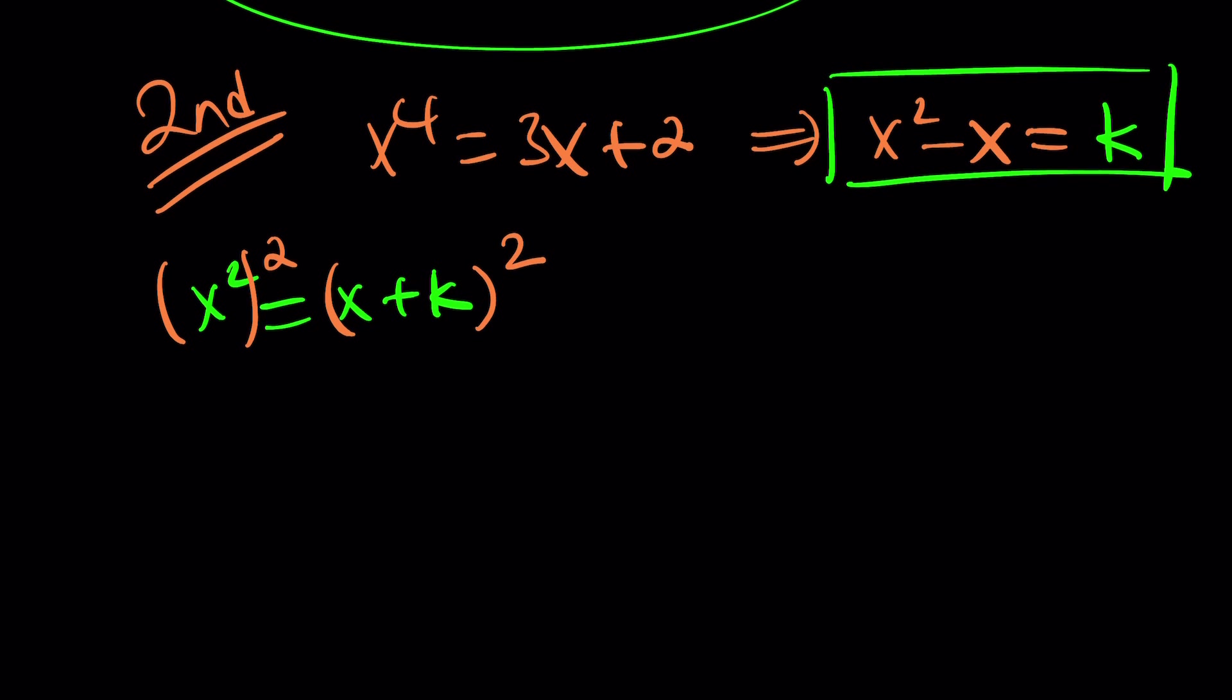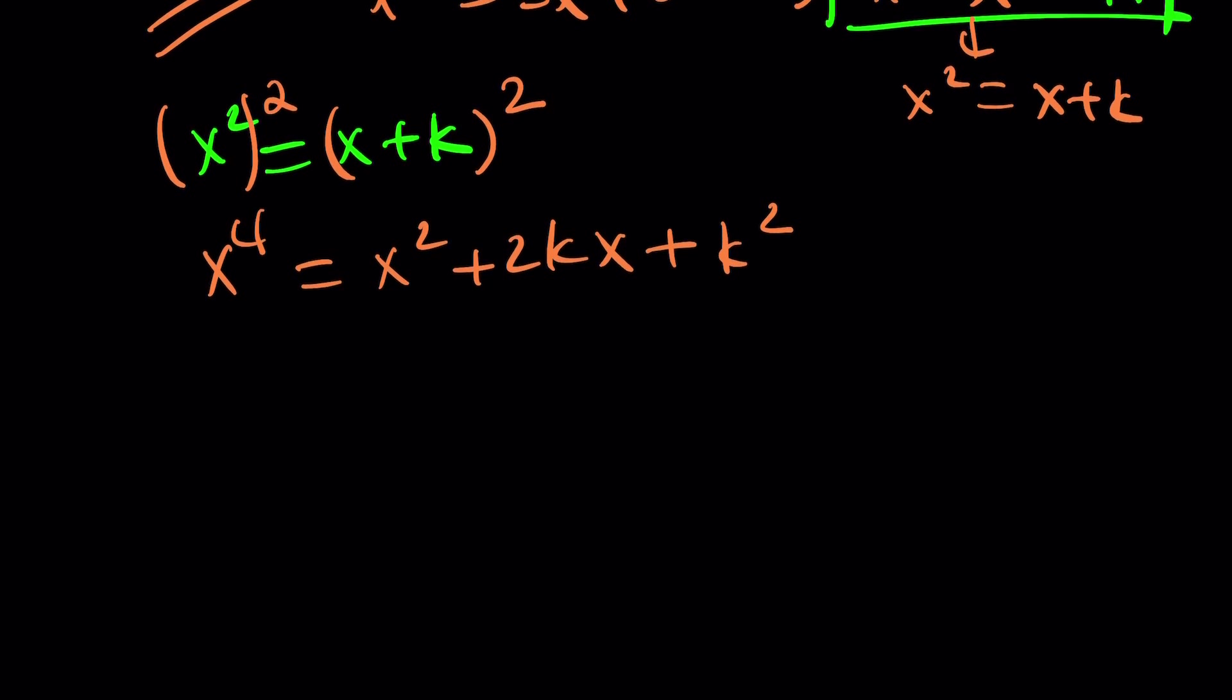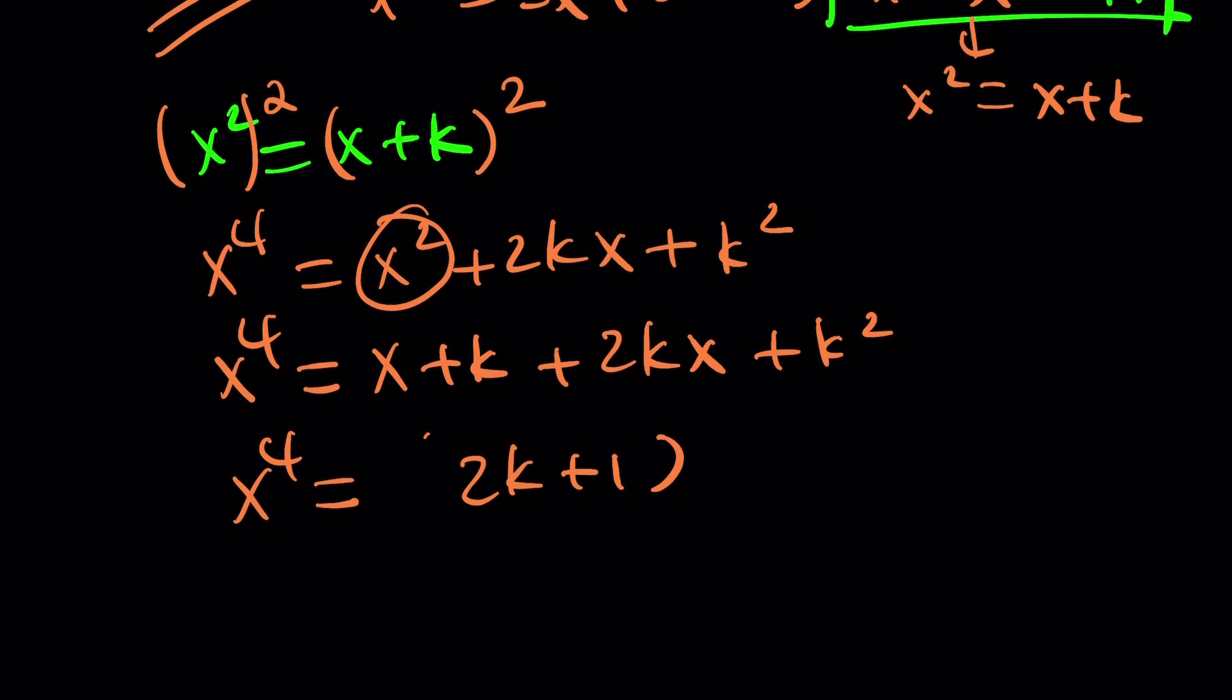So, let's do it. It gives us x to the fourth equals x squared plus 2kx plus k squared. Beautiful. Because, from here, I can replace x squared with x plus k again, which gives me a numerical value. Well, not a numerical value, but something nice. You'll see in a little bit. Now, replace x squared with x plus k. x to the fourth equals x squared, which is x plus k plus 2kx plus k squared.